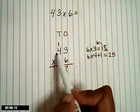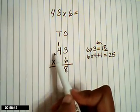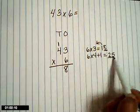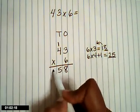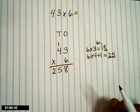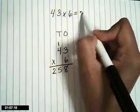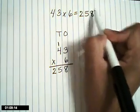Now, because we don't have anything else to multiply, you can bring that whole 25 down. So our product is 258.